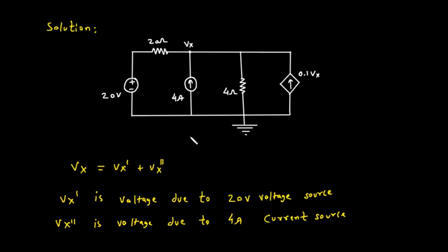The solution will use the principle of superposition. This means we can find the total voltage Vx by calculating the contribution from each independent source separately and then adding them together. So we can write the equation: Vx equals Vx prime plus Vx double prime.